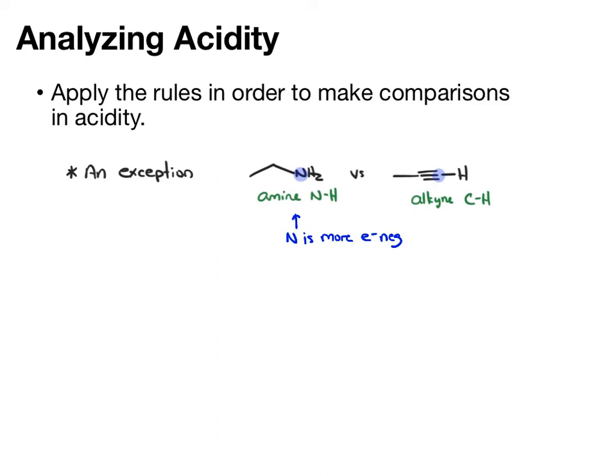And typically, that's going to be the case. But in this particular example, if you have an amine and an alkyne, the hybridization actually wins out. We have the sp3 nitrogen, the sp carbon. Here, hybridization wins. And the alkyne is more acidic than the amine.